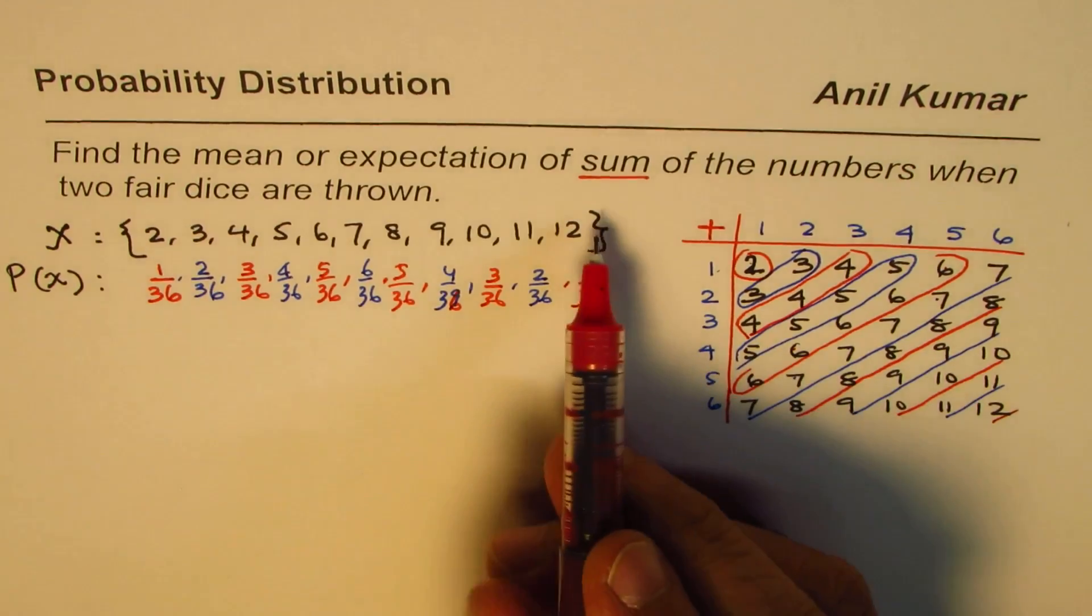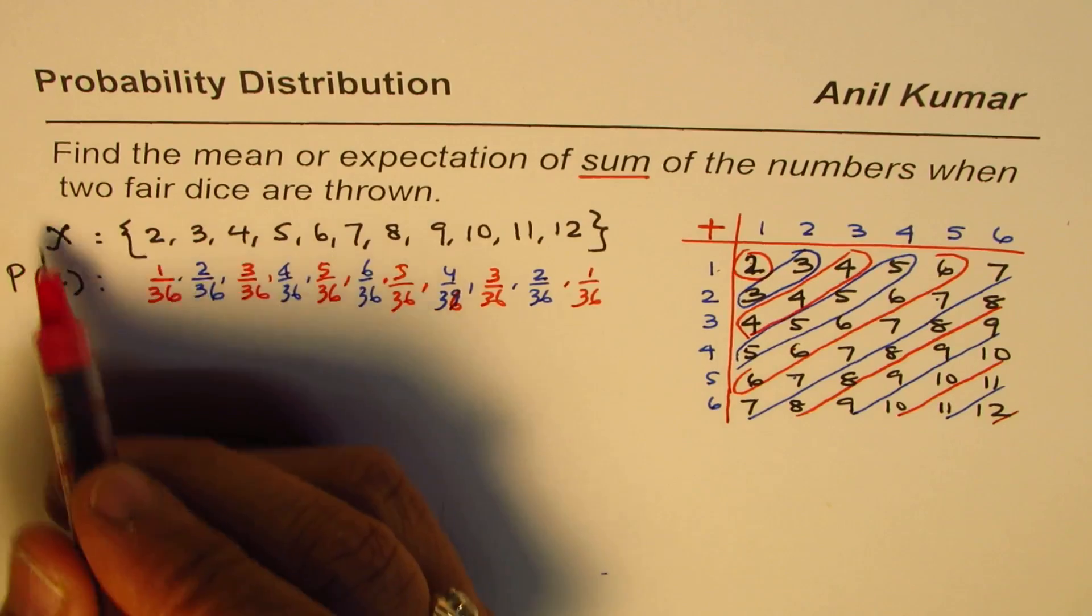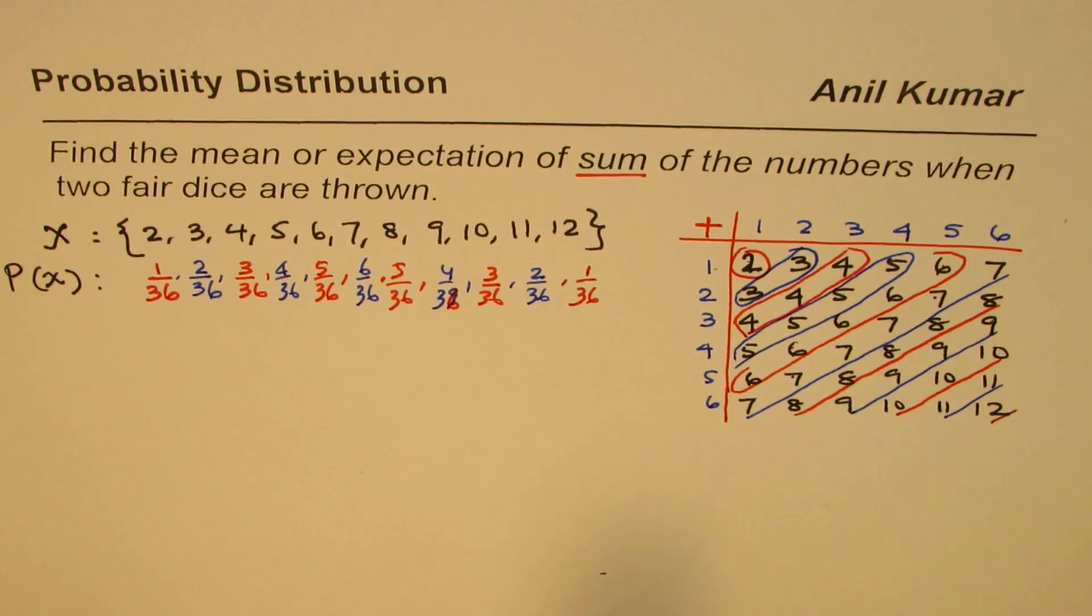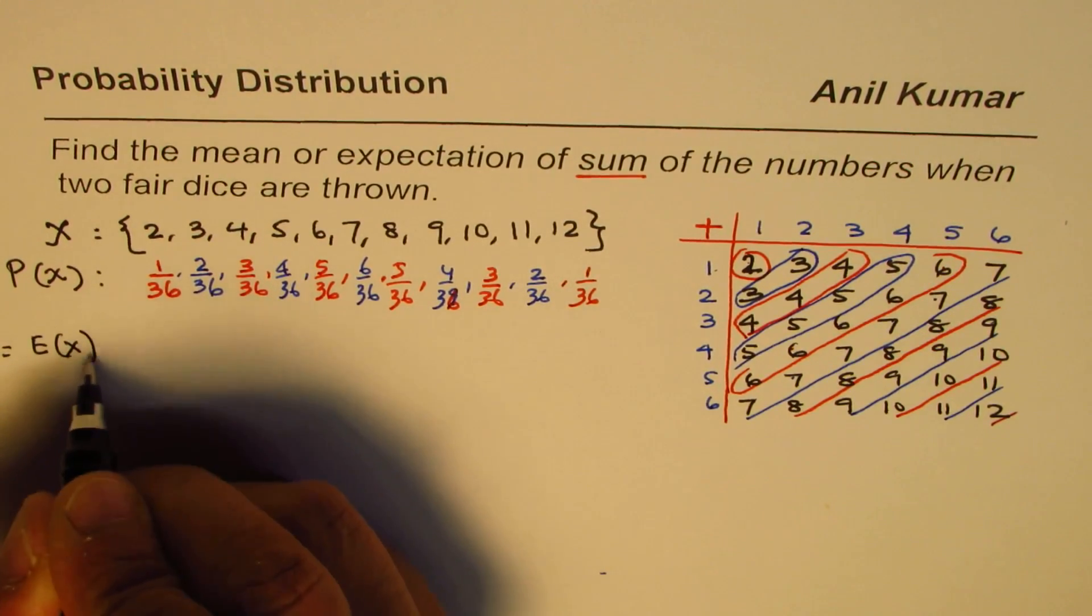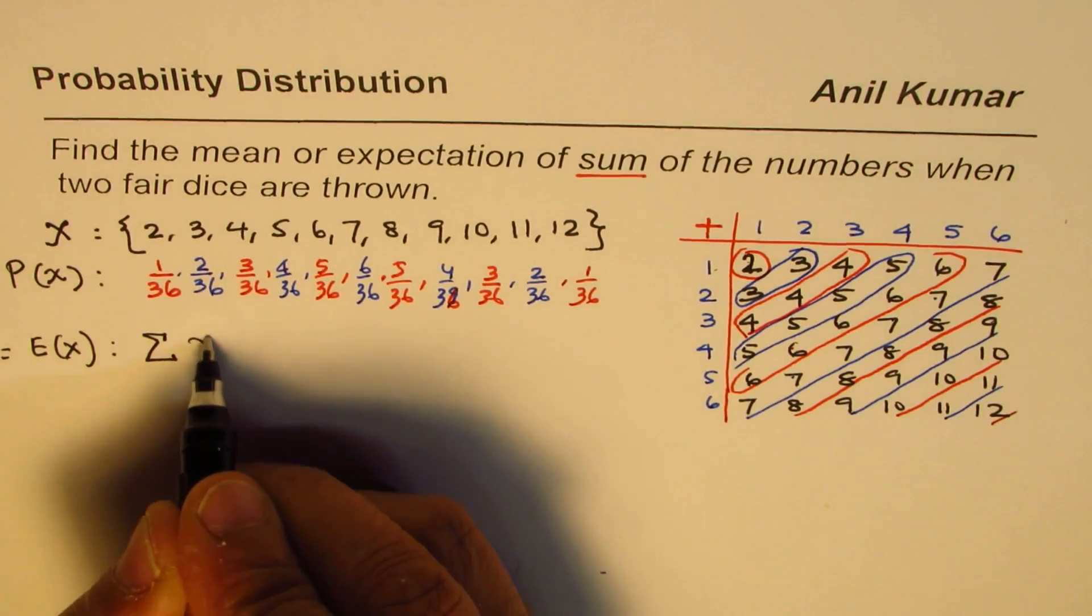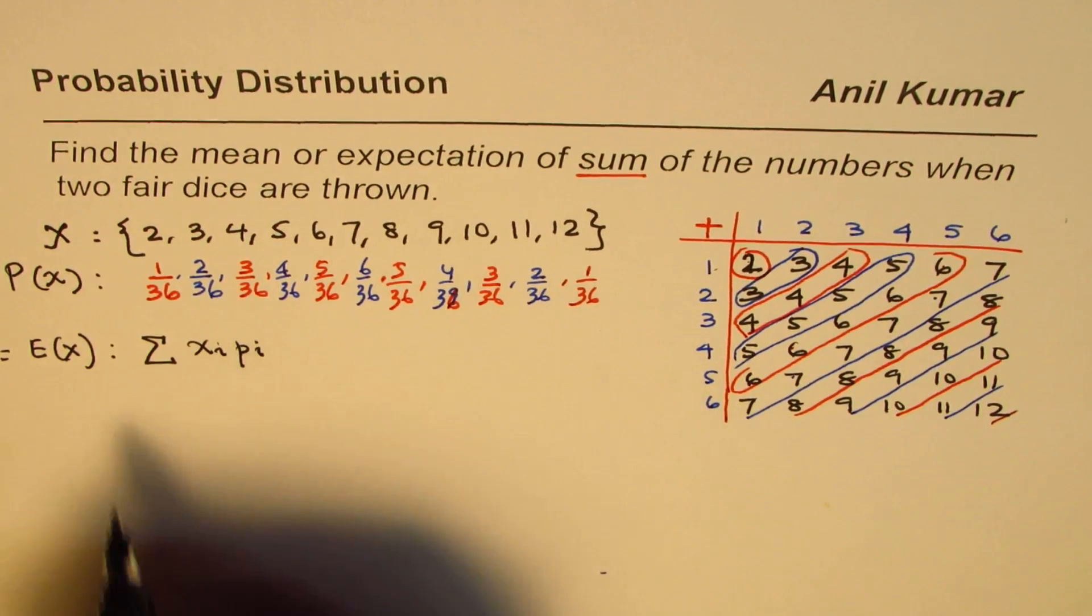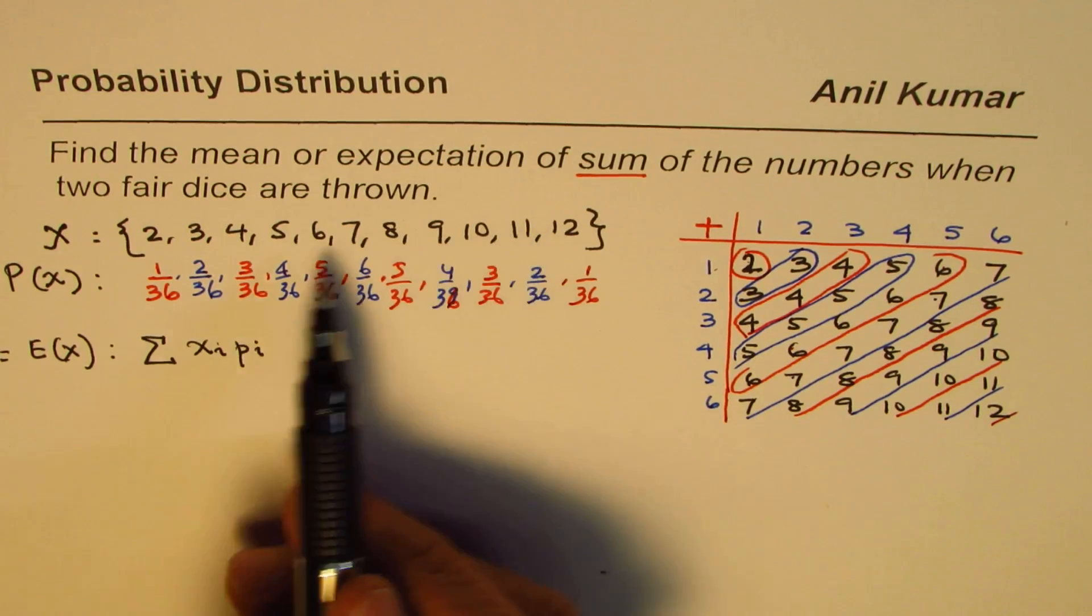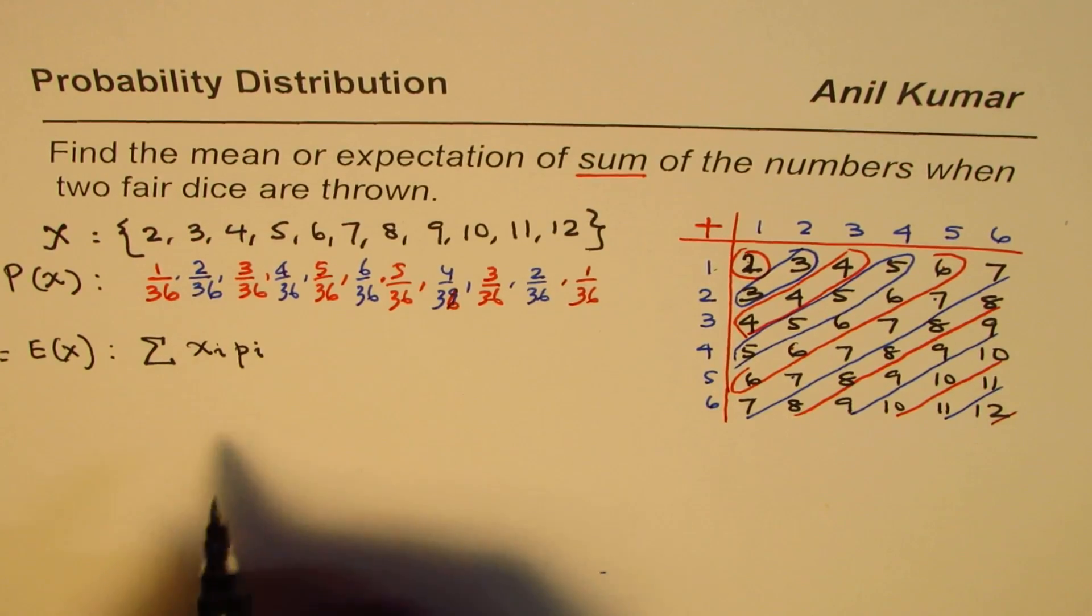To find the mean or expected value of this probability distribution, we need to multiply them. The expected value E(x) equals the sum of xi times pi, where i goes from 2 to 12. We will multiply them and add them up to get the answer.